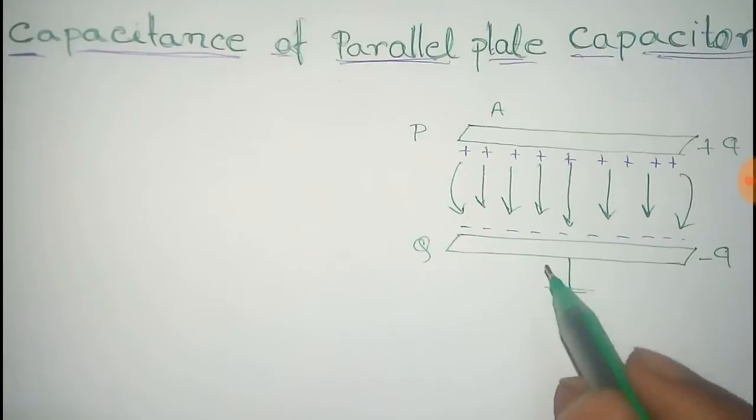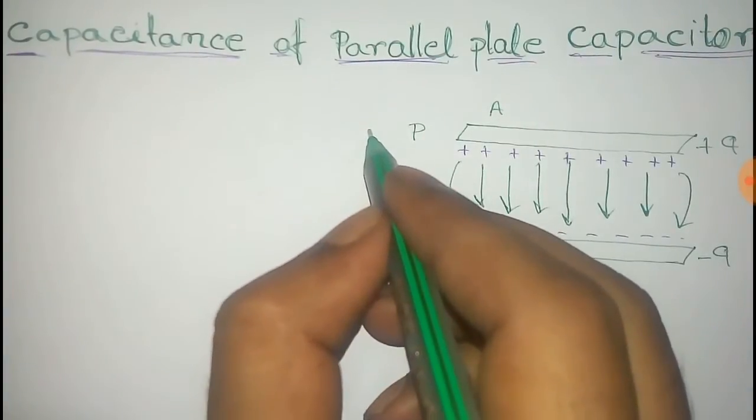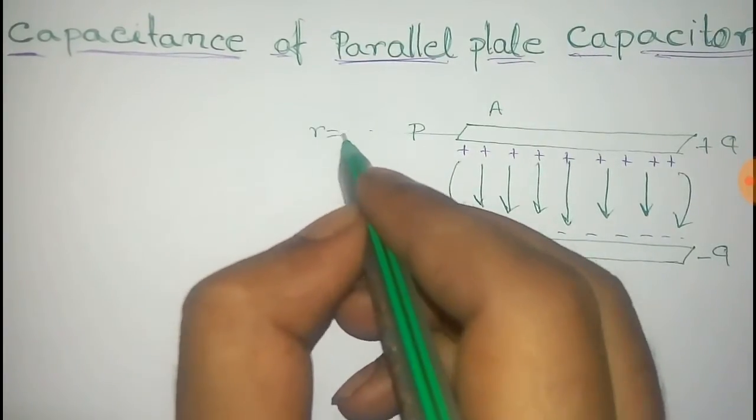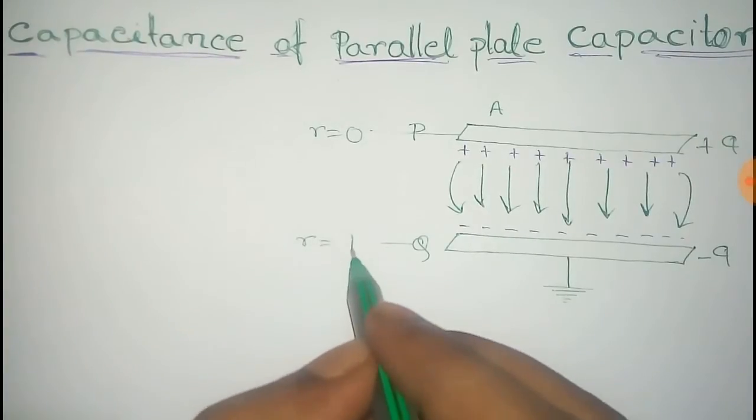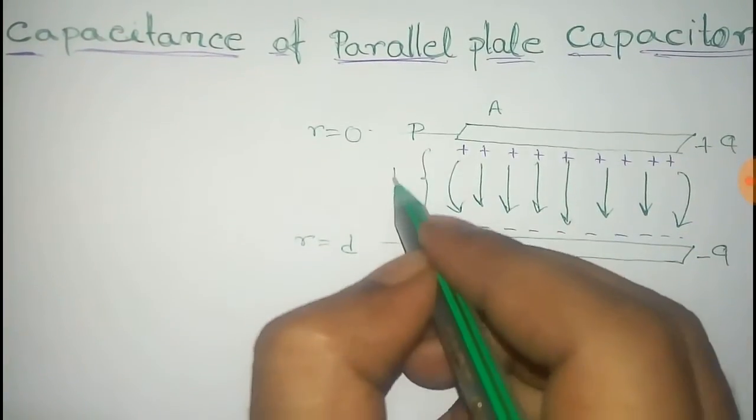Now we take the position of the plate P at r equal to zero and position of the plate Q at r equal to d, because the distance between P and Q is d.